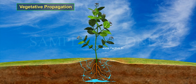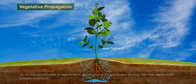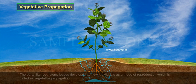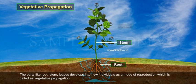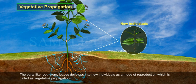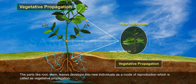Vegetative Propagation. As discussed earlier in regeneration, some parts of plants also develop into new plants under suitable conditions. Parts like roots, stems, and leaves develop into new individuals as a mode of reproduction, which is called vegetative propagation.